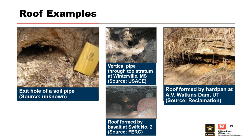Examples of roofing are shown in these photographs. On the left, the exit hole of a soil pipe is shown. The top middle photograph shows a test pit excavated to investigate a boil, showing the vertical pipe through the top stratum. The bottom middle photograph shows how alluvial material below basalt bedrock in forebay's foundation piped, which connected to the forebay through lava flow tubes, penetrated the forebay blanket, and created a sinkhole. The sudden high uplift pressures on the base of the basalt provided uplift below the embankment. Collapse and fracturing of the basalt foundation led to increased flow and eventually breach of Swift Number Two. On the right, hard pan layers shown in the overhang formed the roof at A.V. Watkins Dam.